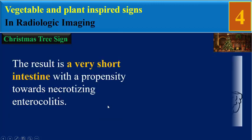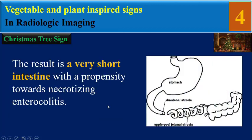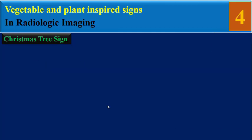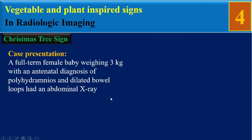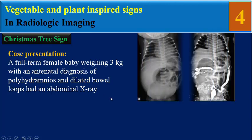The result is a very short intestine with a predisposition towards necrotizing enterocolitis. Now for a case presentation: a full-term female baby weighing three kilograms with an antenatal diagnosis of polyhydramnios and dilated bowel loops.